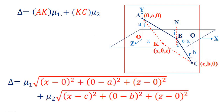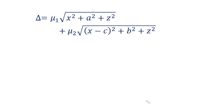Delta equals mu1 times AK plus mu2 times KC. AK equals the square root of (x−0)² + (0−a)² + (z−0)², and KC equals the square root of (x−c)² + (0−b)² + (z−0)². Simplifying, x minus 0 squared is x squared, giving us x² + a² + z² under the first root and (x−c)² + b² + z² under the second root.